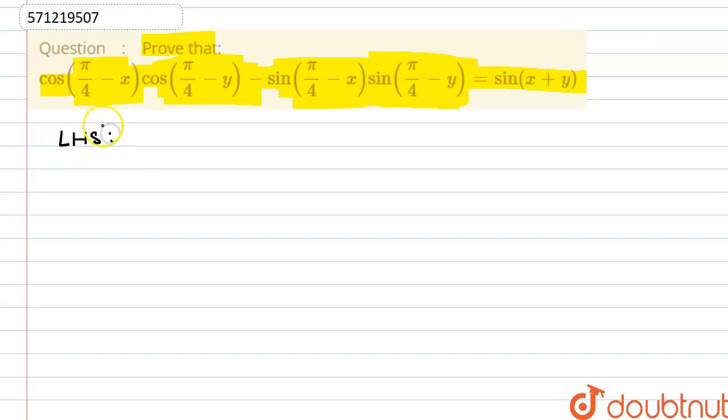Left-hand side, if we solve from left-hand side, we are given cos of pi by 4 minus x into cos of pi by 4 minus y minus sin of pi by 4 minus x into sin of pi by 4 minus y.